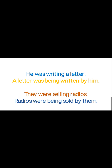Similarly, in the next sentence: 'They were selling radios.' Here 'radios' is brought to the subject position. Since 'radios' is plural, 'were' is written, followed by 'being' because it is continuous tense, then the third form of 'sell' which is 'sold', and 'by them'. 'Them' is used for 'they'.